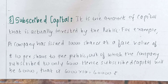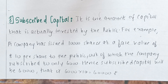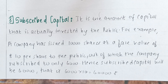Moving on to subscribed capital — this is that capital which is actually invested or subscribed by the public. For example, a company issued 10,000 shares at a face value of rupees 10 per share, but the public subscribed to only 6,000 shares. So the subscribed capital will be rupees 60,000, that is 6,000 × 10.